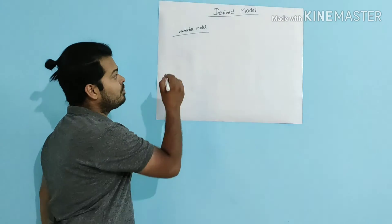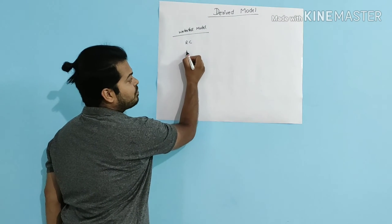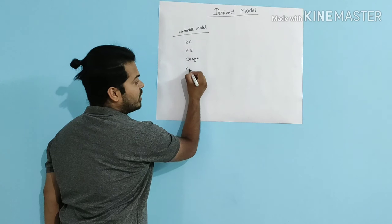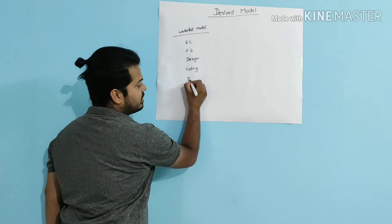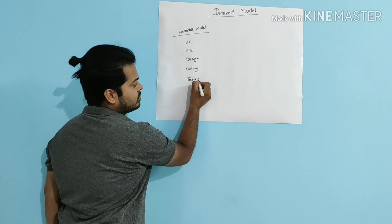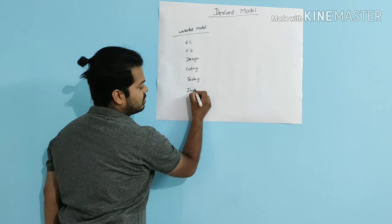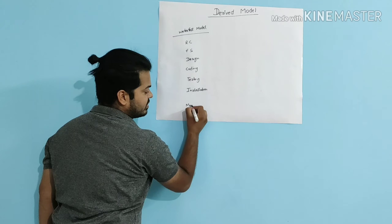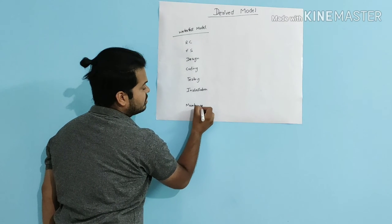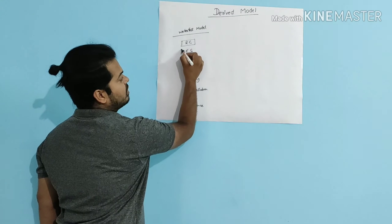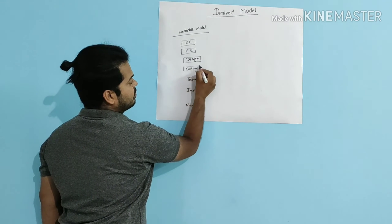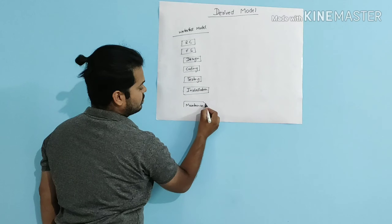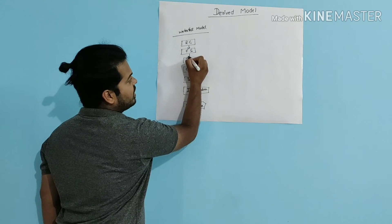If you remember, in the waterfall model the stages are: requirement collection, feasibility study, design, coding, testing, installation, and maintenance. These are the 7 stages of the waterfall model.